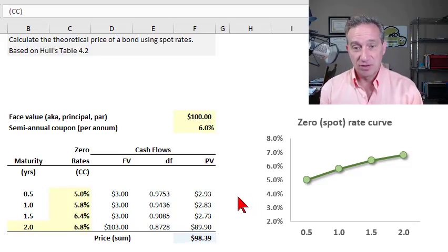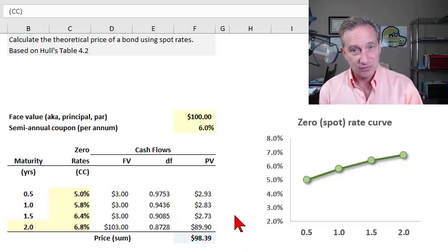Here I'm going to show the calculation for the theoretical price of a bond using spot rates. By theoretical price we mean the present value if we discount the future cash flows.